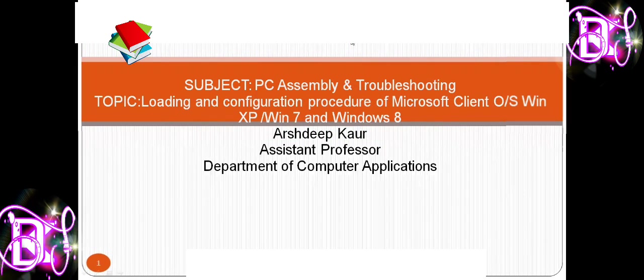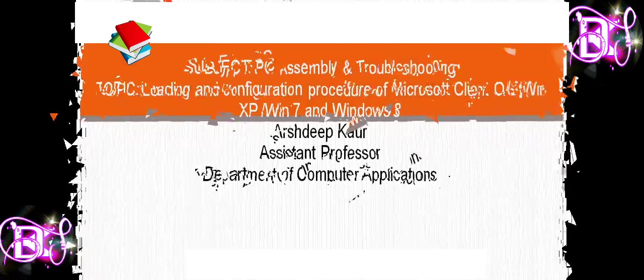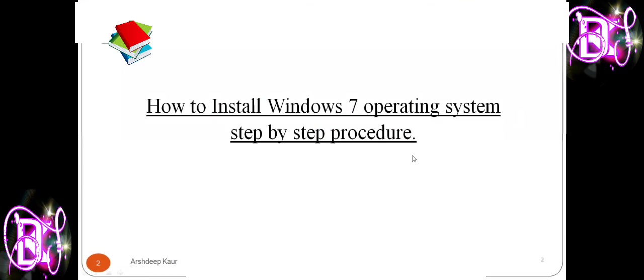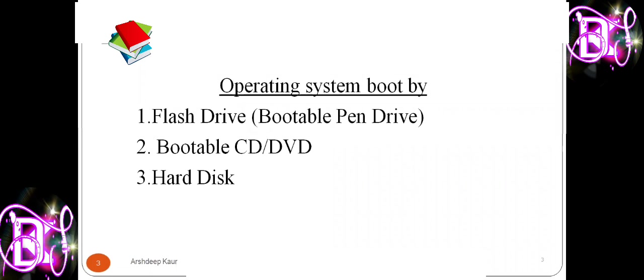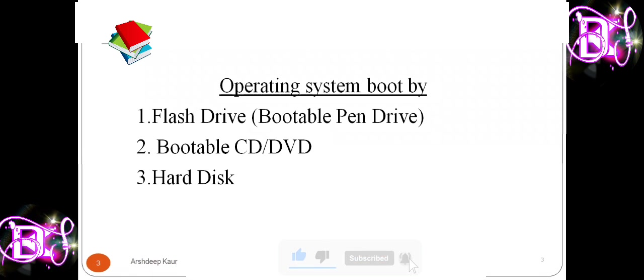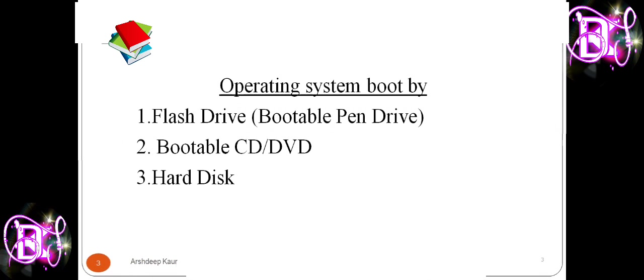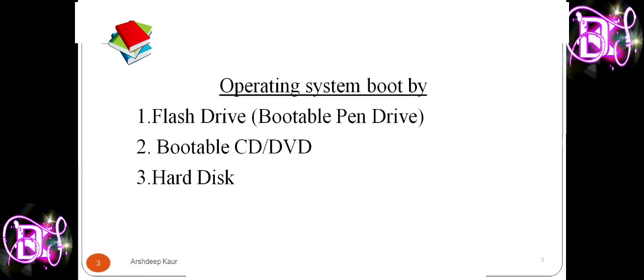Good afternoon. Today the topic is how to install Windows — it may be Windows 7, 8, or 10. We are going to discuss it step by step. First, we have different options for how we can install Windows: you can use a pen drive, a bootable CD or DVD, or a hard disk. By default we install Windows from CD or DVD, but if you want to install it using a pen drive you have to make some small modifications.